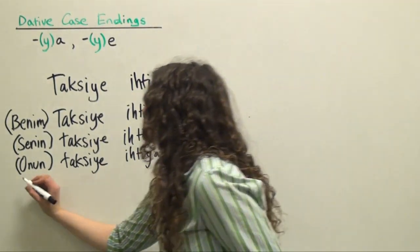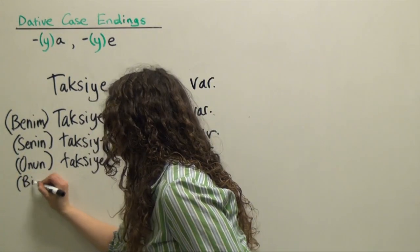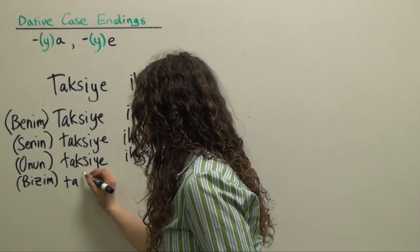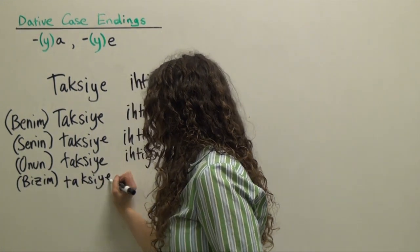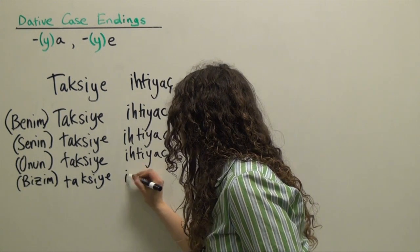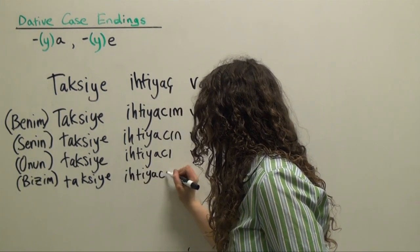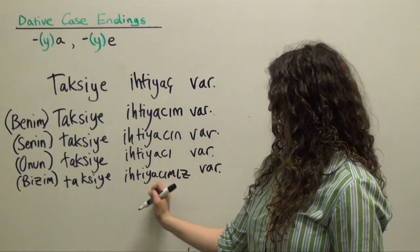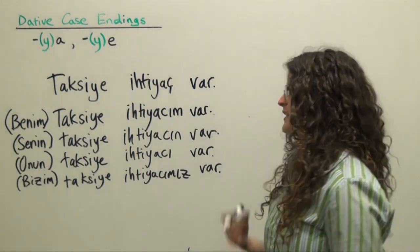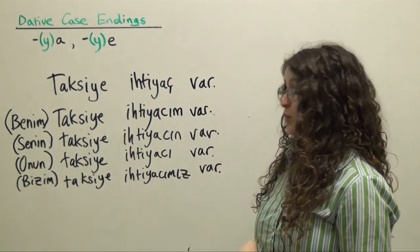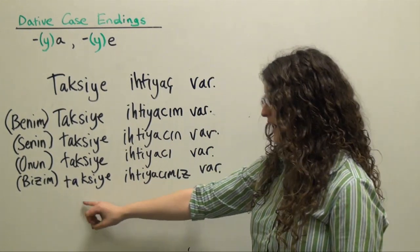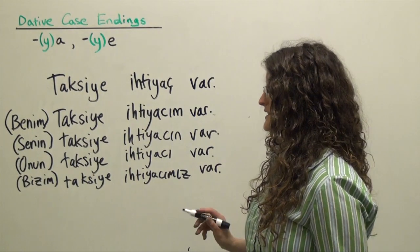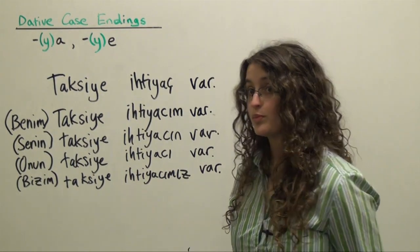Very similar situation with the plural. Optional pronoun in the genitive — 'bizim' — our. 'Taksiye ihtiyacımız var' — our need for a taxi exists, we need a taxi. Or alternatively, for 'we don't need a taxi': 'Bizim taksiye ihtiyacımız yok' — our need for a taxi literally does not exist.